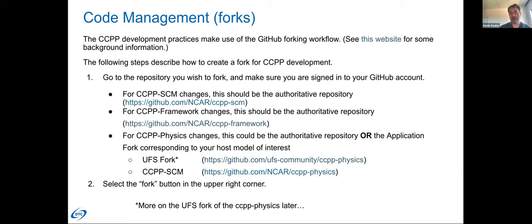Where you fork your repository from matters a little bit. You could always open pull requests from any repository. But generally, these are the authoritative repositories we suggest people start working from. For the single column model and framework, this is the NCAR authoritative repository. For UFS-related applications, they have their own fork that changes go through before making it to the authoritative fork, whereas the single column model uses the authoritative repository directly.